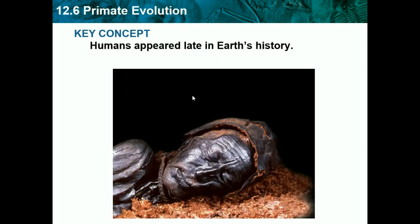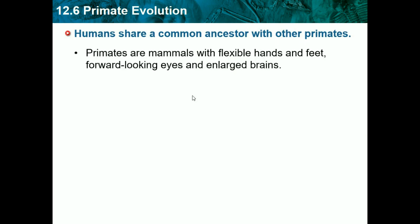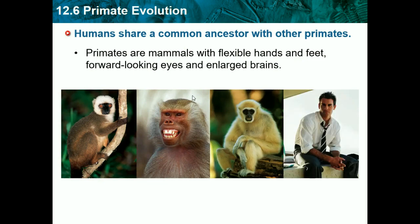Section 12.6 is primate evolution. Primates are mammals with flexible hands and feet, forward-looking eyes, and enlarged brains. Humans appear late in Earth's history and share a common ancestor with other primates. Basically, this includes a bunch of types of monkeys and us.